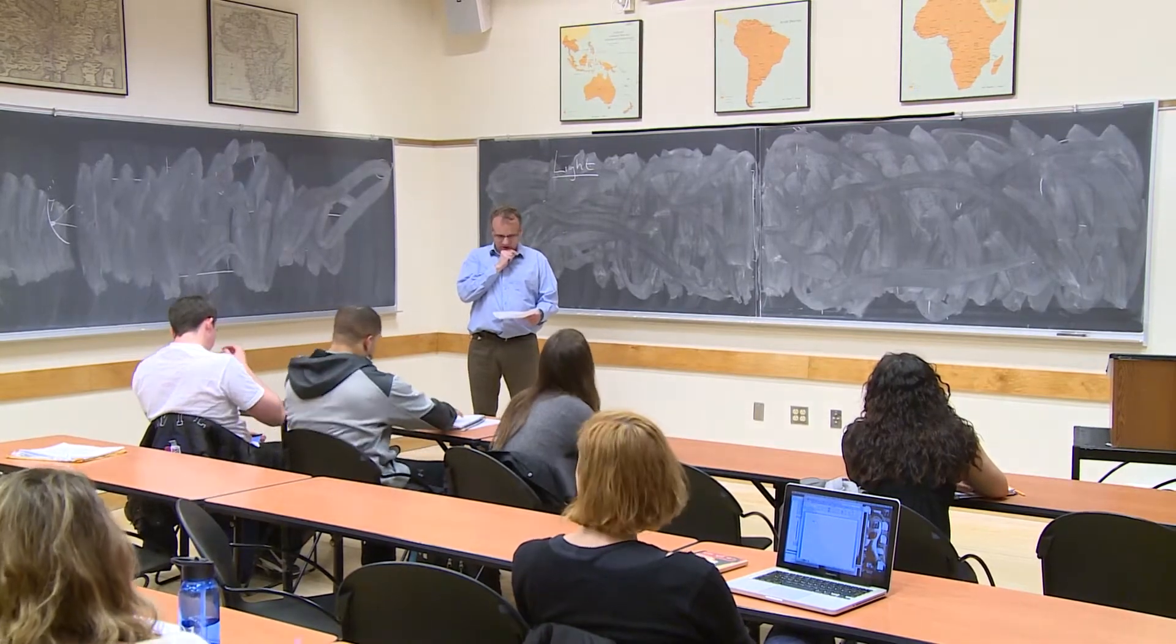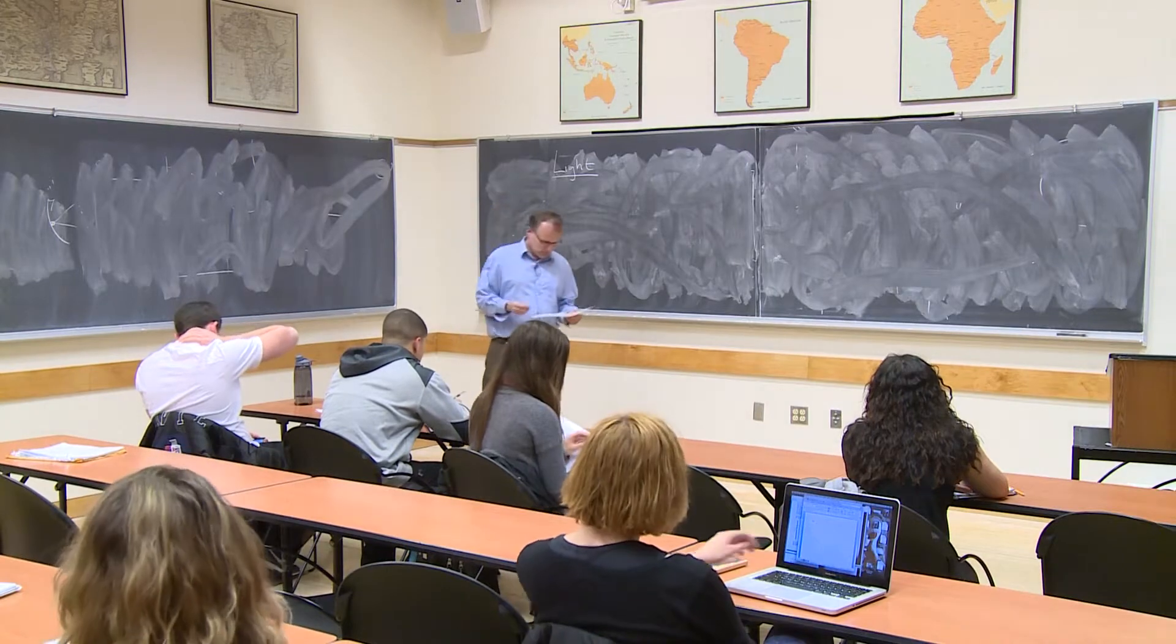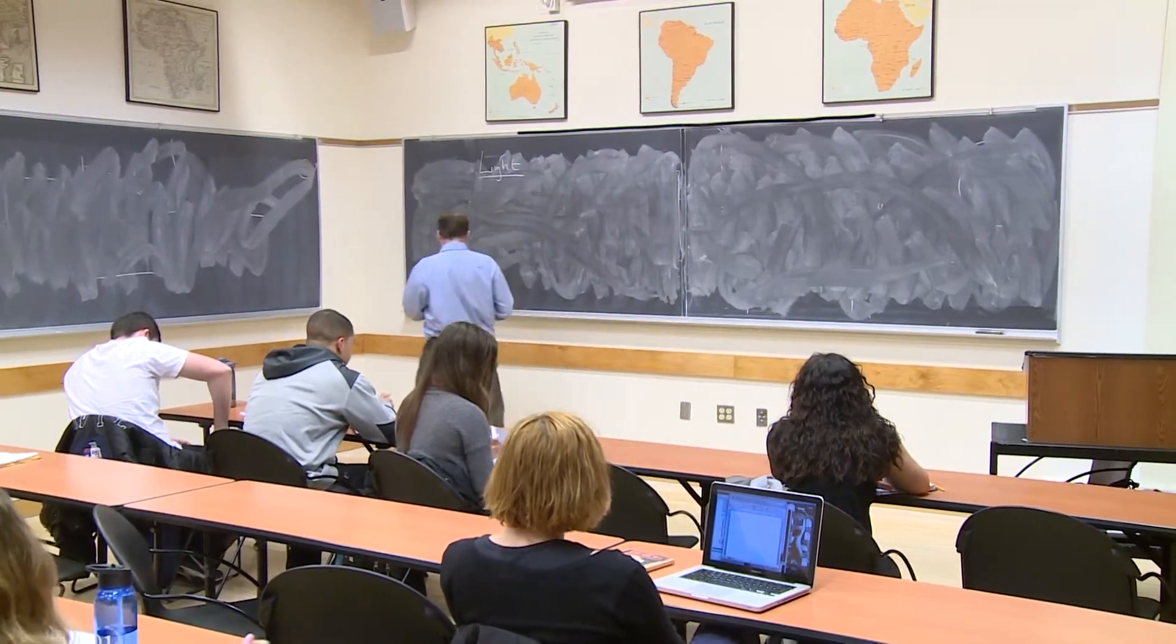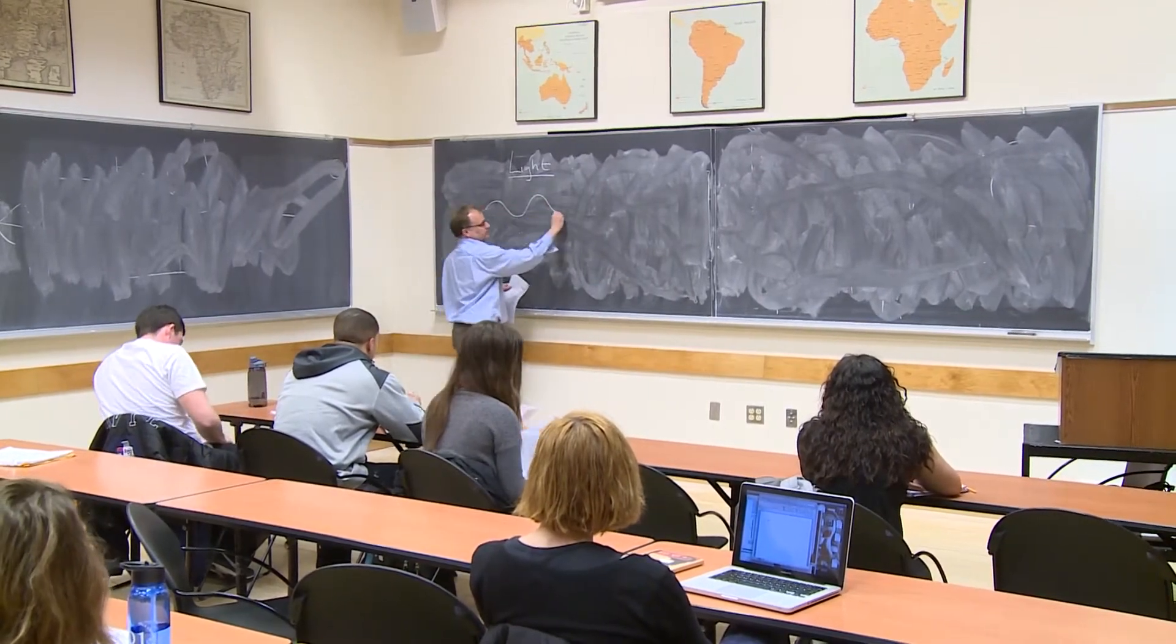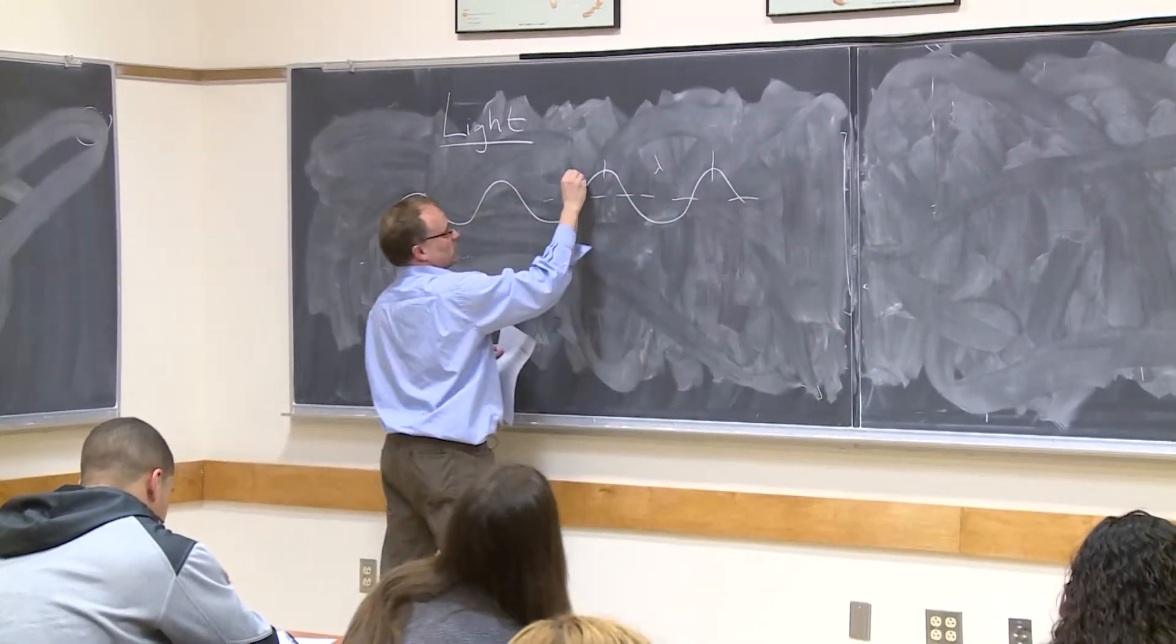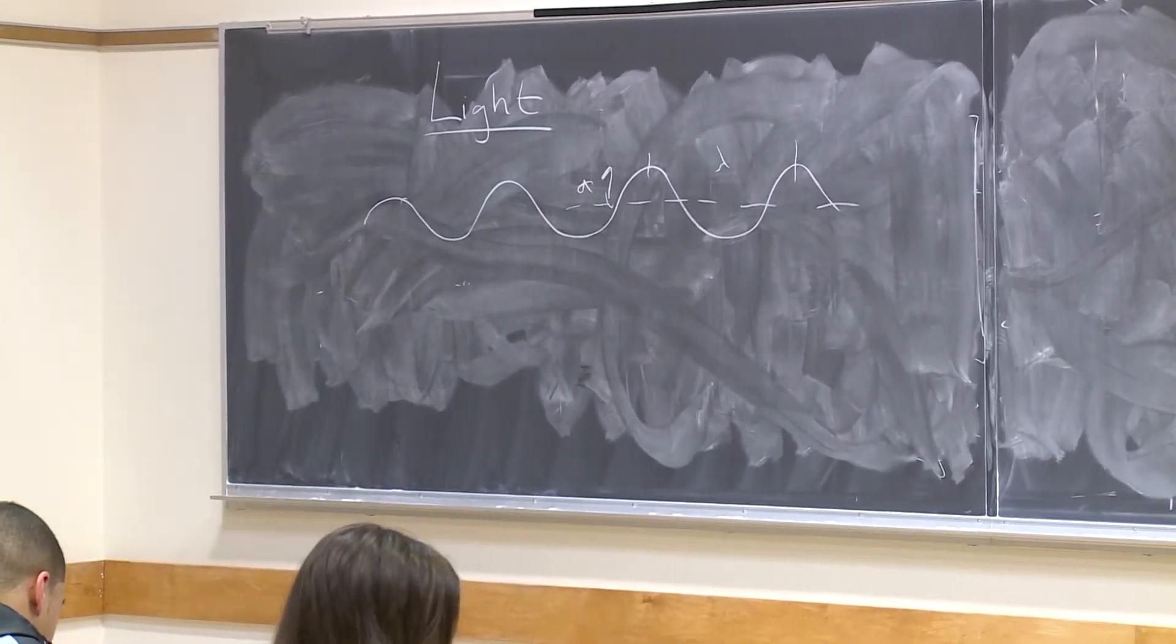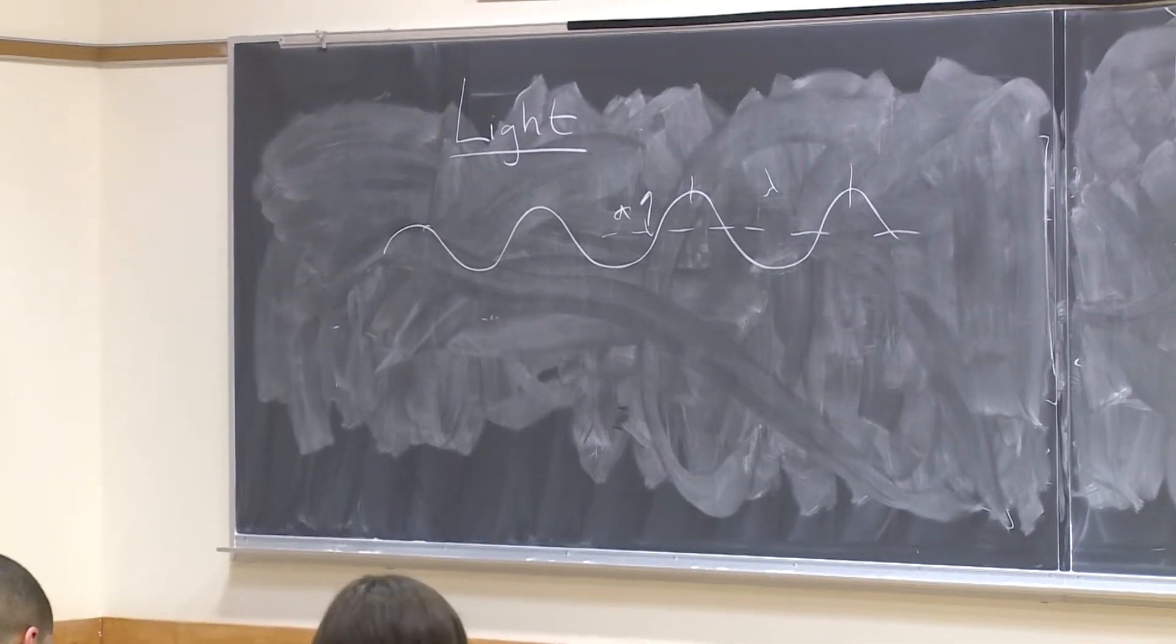But it's an accepted theory of small things when you get down to atomic size. So light, what is light? This representation of light as a wave with a wavelength and an amplitude is how we originally used to think about light prior to quantum mechanics.